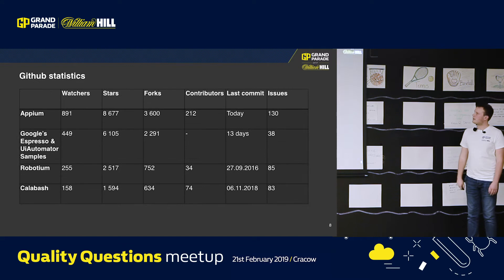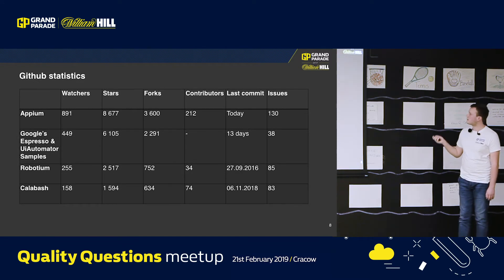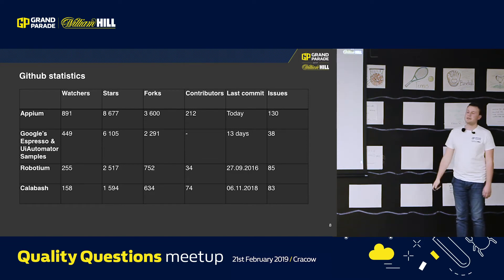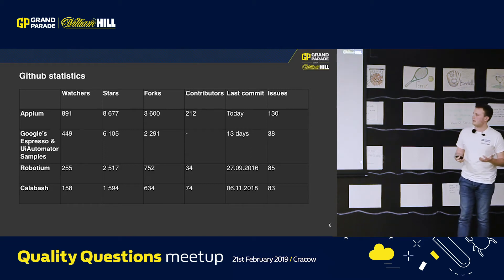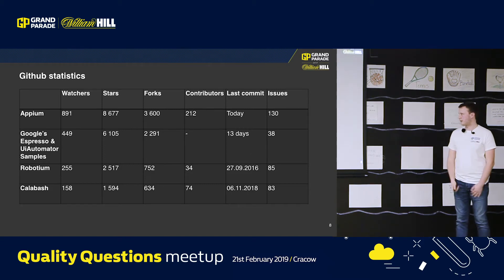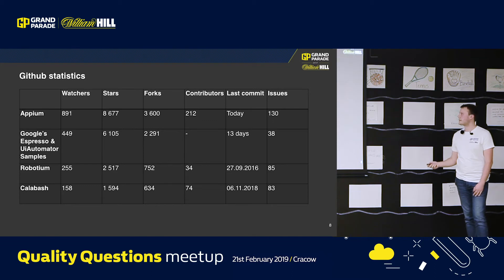If we look at GitHub statistics, Appium also has the most popular repository among all of those. But we should know that for Google, both Espresso and UI Automator share a single repo. It's used not as a repo of the framework itself, but as samples showing how to use the framework. So there are no contributors and obviously far fewer watchers, stars, etc.